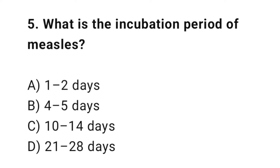Question number five: what is the incubation period of measles? The right answer is C — 10 to 14 days. Measles appears 10 to 14 days after infection.